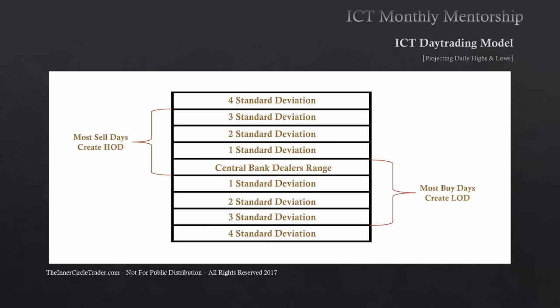As mentioned in the previous lesson, Lesson 3 on central bank dealers range: when we talk about the most likely sell days moving up as high as three standard deviations, and most buy days moving down making the low of the day as low as three standard deviations from the central bank dealers range - we can take this one step further. The range at which price works within the protractionary state away from the central bank dealers range - are we moving higher for a sell day? That's not Fibonacci extensions; we're looking specifically at the range that IPTA will go into protractionary state. It's the Judas swing.